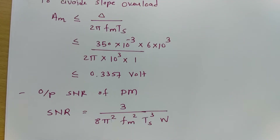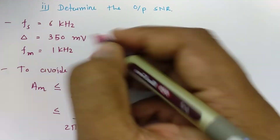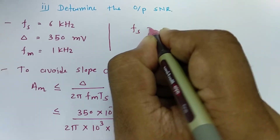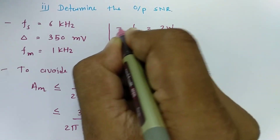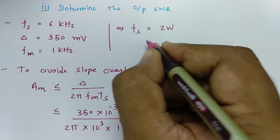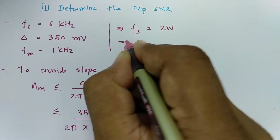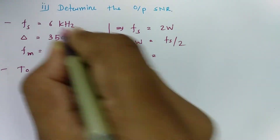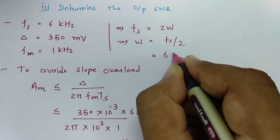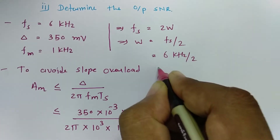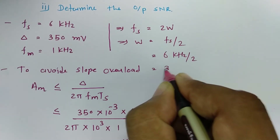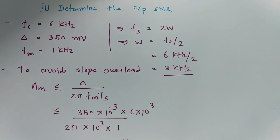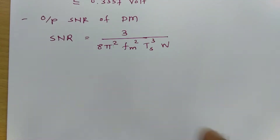We can find bandwidth W from the sampling rate fs. The relation is fs = 2W, so W = fs / 2. With fs equal to 6 kilohertz divided by 2, W is equal to 3 kilohertz.